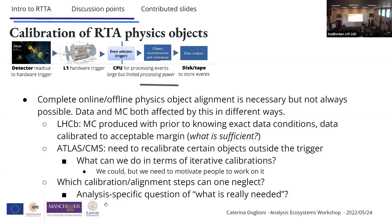For Atlas and CMS, taking jets as an example: you need to recalibrate certain objects outside the trigger, because you get the information needed from offline analysis using another physics object and you need the full statistics of the dataset. So you need to keep enough information in the smaller data format to do that. An alternative is iterative calibration — the trigger sees all physics objects, can you use that for calibration as you go? We could, but we need to motivate people to work on it. The general question is: what is sufficient, what can you neglect?